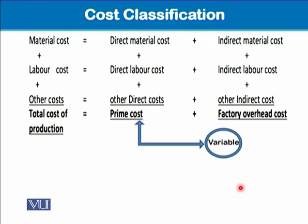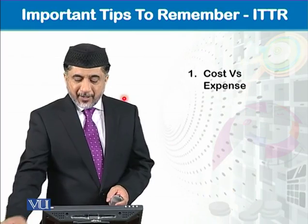We have direct material cost, direct labor cost, and factory overhead cost. Direct material cost and direct labor cost together are known as prime cost. Other direct costs can also be part of this prime cost group. The conversion cost — which includes direct labor and factory overhead — converts the direct material cost into the finished product. So we have prime costs and conversion costs.